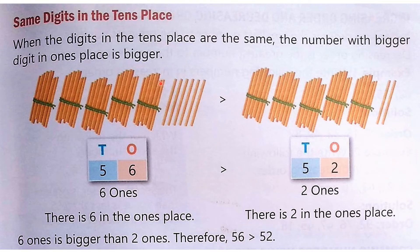If the same digit is in the tens place, what do we do? For example, 56 and 52: both have 5 in the tens place, so they are not automatically equal. Now we look at the ones place. This is 6 and this is 2, so 6 is bigger — therefore 56 is greater than 52.